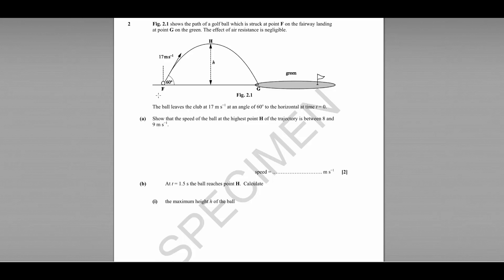We know that it is being struck at 60 degrees from the horizontal at 17 metres per second. Part A asks us to show that the speed of the ball at the highest point H is between 8 and 9 metres per second.